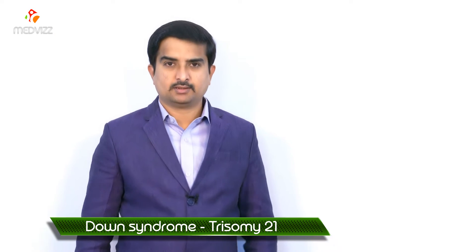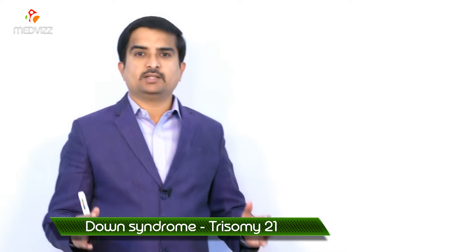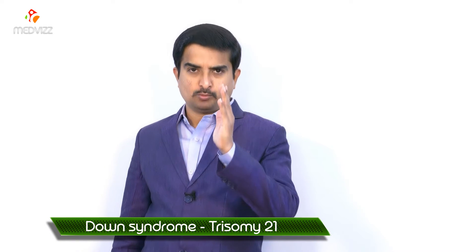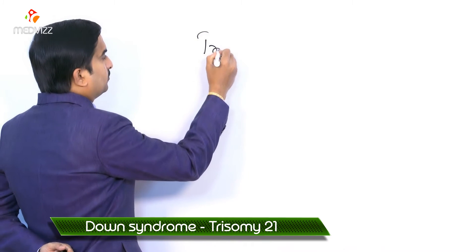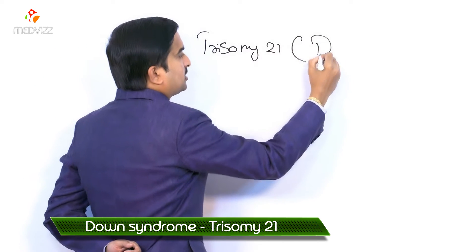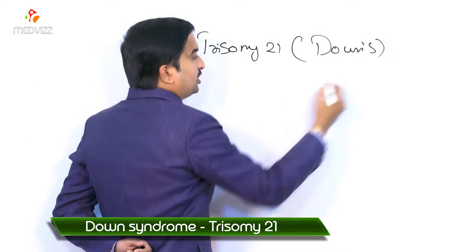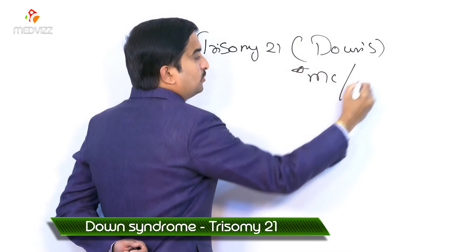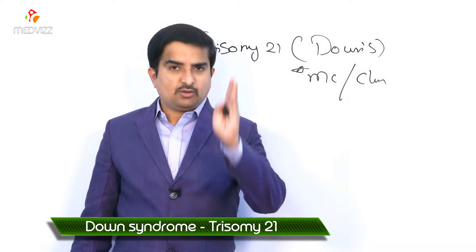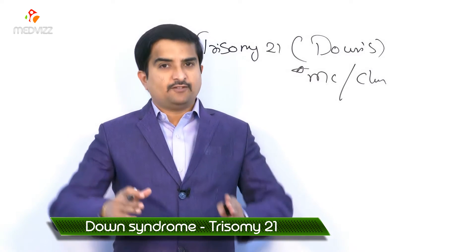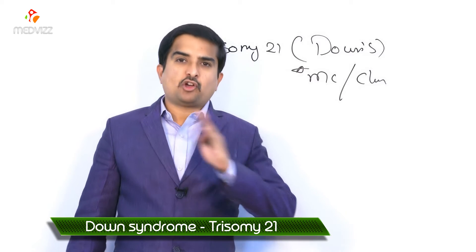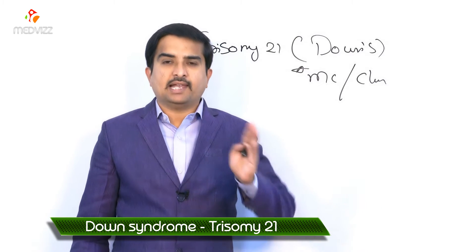Trisomy 21, also called Down syndrome, is the most common chromosomal disease. The incidence increases with maternal age — if the mother is younger than 30, it is seen in less than 1 out of 1,000 births.